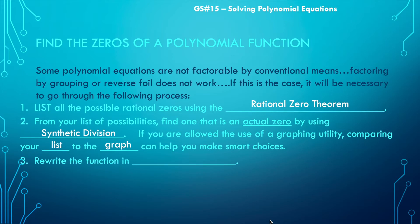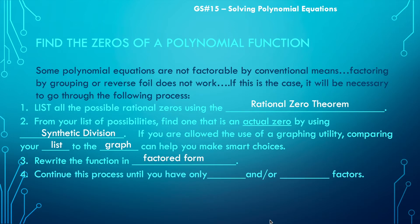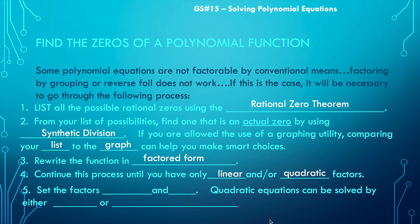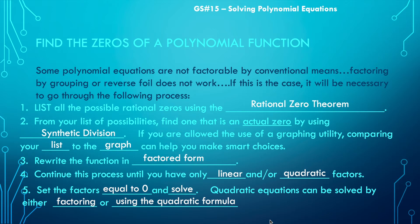After you've found something that works with synthetic division, you're going to rewrite your function in factored form and continue this process until the whole function is written in factored form with only linear and/or quadratic factors. Then you're going to take each of those factors, set them equal to zero, and solve for x. Resulting quadratic equations can be solved by factoring or the quadratic formula. Finally, list your solution set.